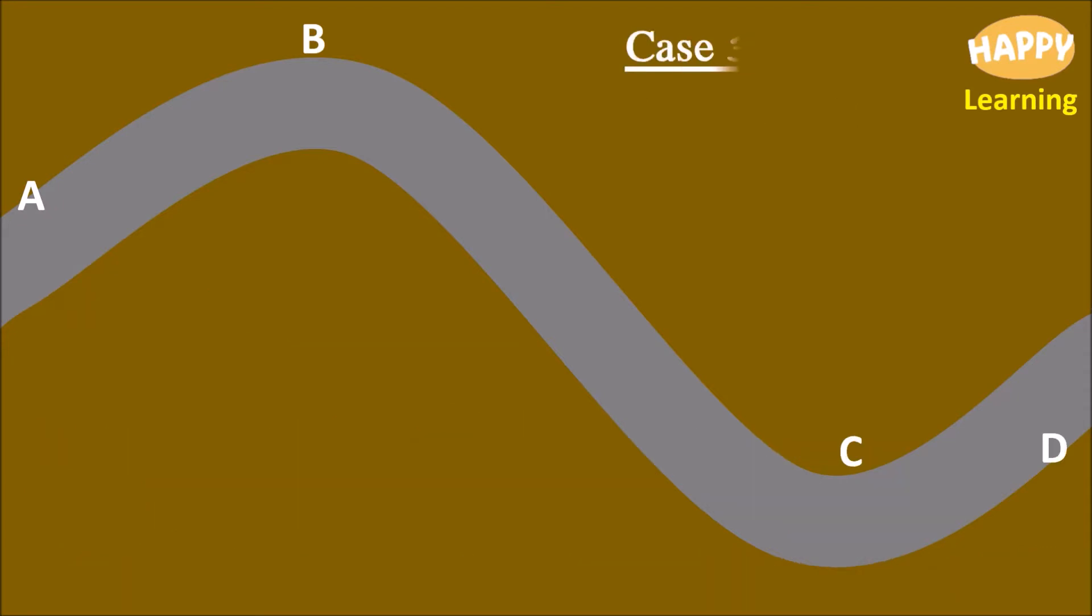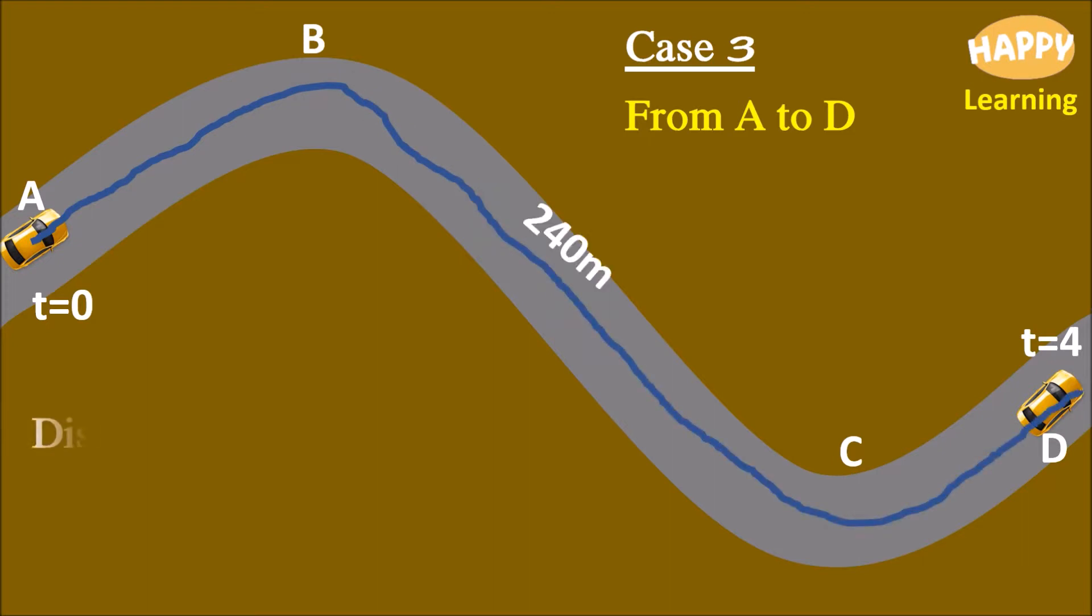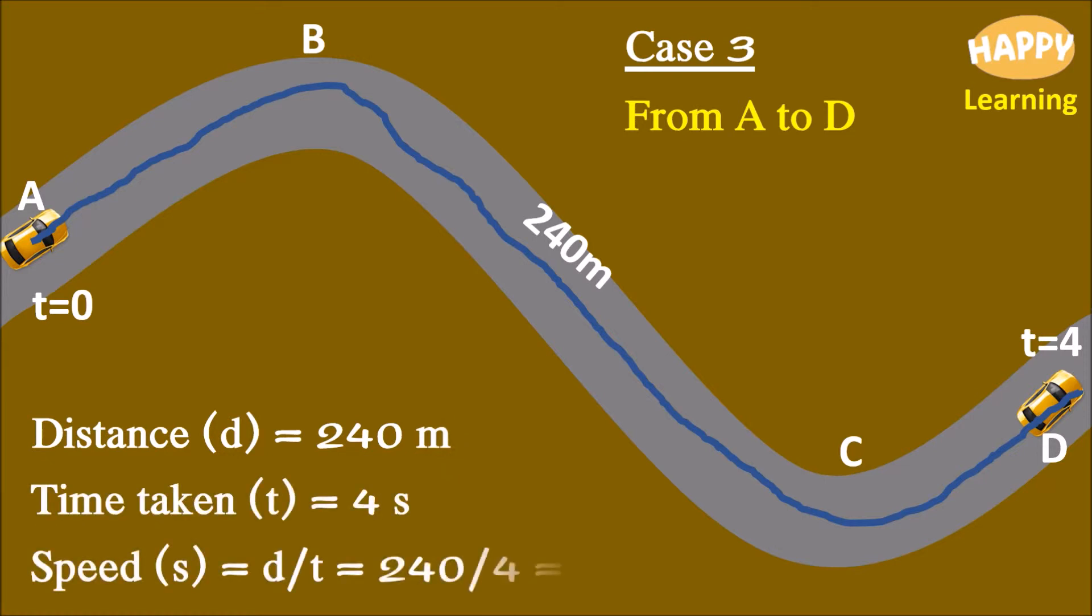Case 3. The journey from A to point D. The length of the track is 240 meter, distance D is equal to 240 meter. Time of travel is equal to 4 seconds. Therefore, speed is equal to 60 meter per second.